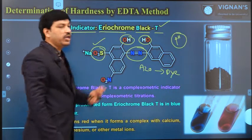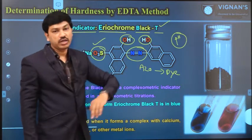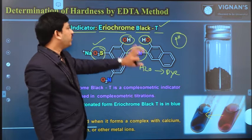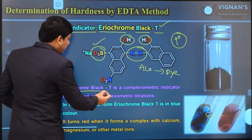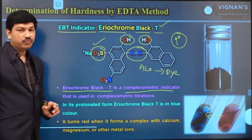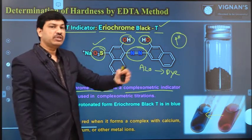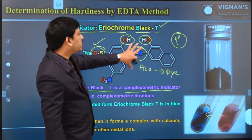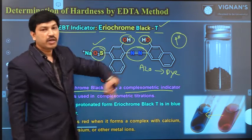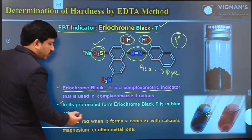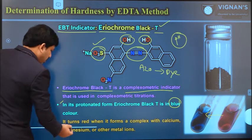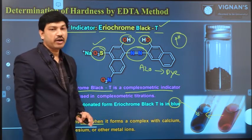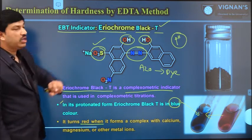This molecule is actually highly sensitive to pH value. If you change the pH value, automatically this compound changes its color. During the titration process, normally it changes color from wine red to blue. EBT is a very good complexometric indicator — it can also make complexes with metal ions. In its free (protonated) form, Eriochrome Black T is available in blue color, and it turns to wine red color once it forms a complex with metal ions. Due to this color change, we can use this indicator for the EDTA titration method.